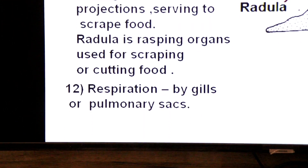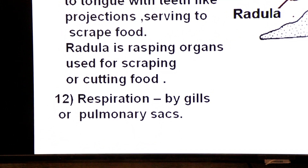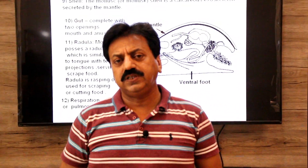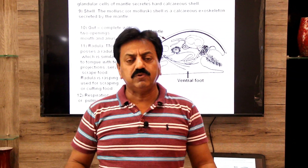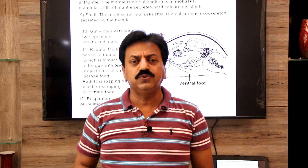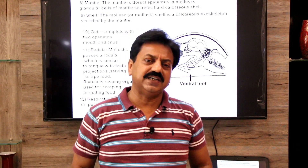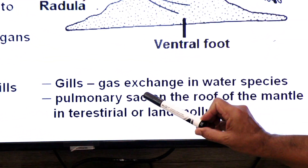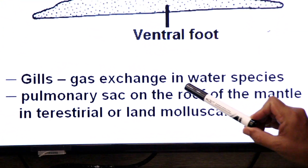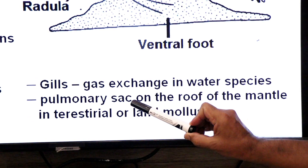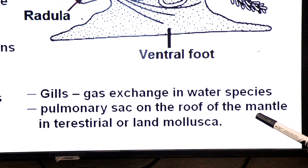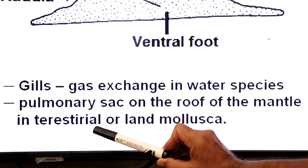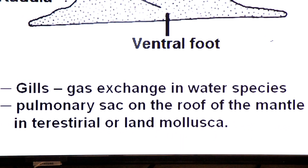Respiration occurs by gills or pulmonary sacs. Respiration through gills occurs in aquatic forms, while respiration through pulmonary sacs occurs in terrestrial land forms. Gills carry out gas exchange in water species, and pulmonary sacs are present on the roof of the mantle and are used for respiration in terrestrial or land Mollusca.